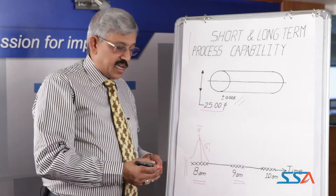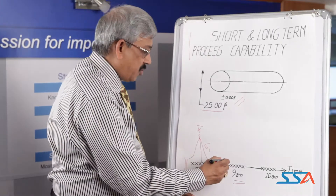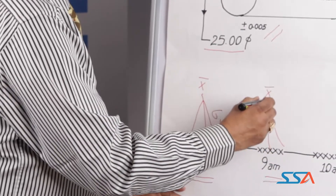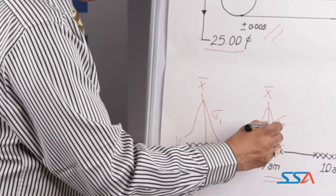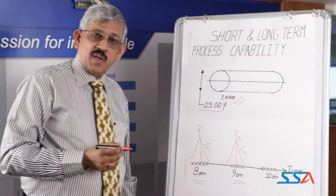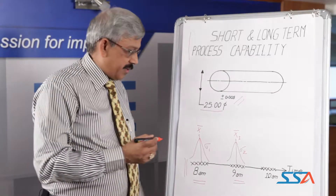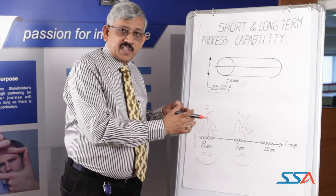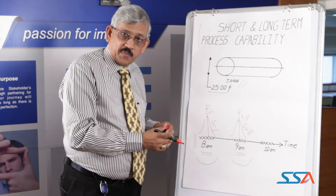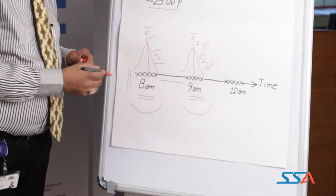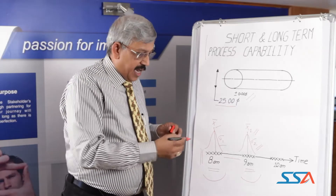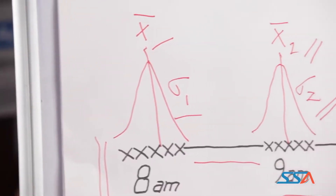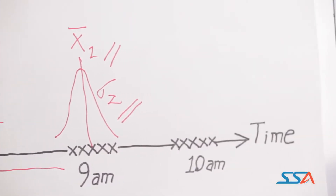Probably 1 hour later, when we go back at 9 o'clock, if we look at the variance of those 5 more samples, it will have its own standard deviation sigma 2 and the mean value X2 bar. As far as the subgroup is concerned at 8 am and at 9 am, we have a snapshot of how the process is performing. We have no idea what happened in between, and if we continue production for 8 or 9 hours, the picture may emerge in a different way.